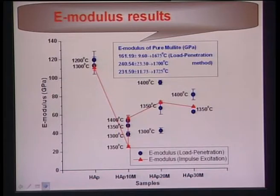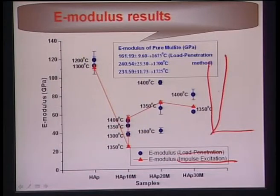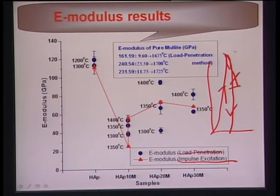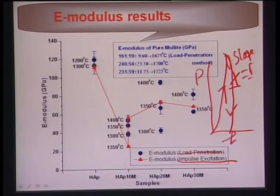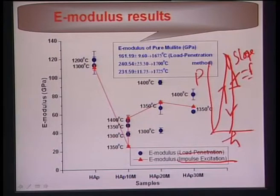Elastic modulus can be measured in two ways: from the slope of the initial unloading curve in a load-penetration (micro-indentation) test, where the x-axis is penetration depth H and y-axis is load; or by impulse excitation, where bar samples are struck with a steel or tungsten carbide ball, the resonance frequency is measured, and a formula gives the elastic modulus.